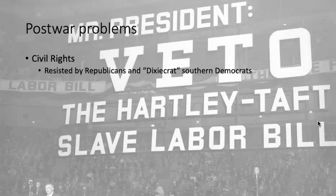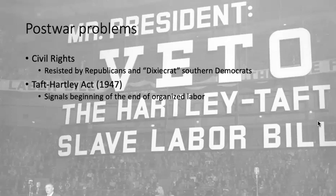Post-war problems: civil rights — Dixiecrats and Republicans don't want civil rights legislation advanced. Taft-Hartley is an anti-union law passed in 1947, really the beginning of the end in terms of the strength of American labor unions. The power of unions will be slowly chipped away at during this period. When we look at the 1970s, we'll see American unions and the AFL-CIO and the automakers unions hit hard by offshoring and automation. But that downward trend really begins in the 1940s.